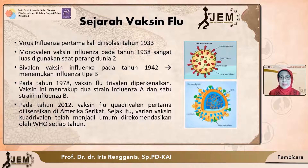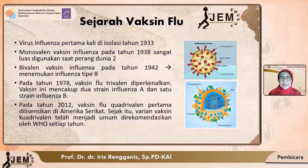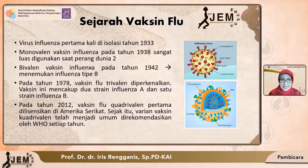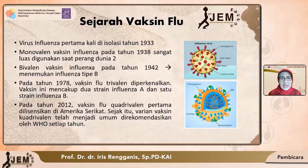Kita harus banyak belajar dari pandemik flu. Sejarah vaksin flu sendiri: virus influenza pertama kali diisolasi pada tahun 1933. Pada tahun 1938 ditemukan yang monovalen — hanya satu strain — dan digunakan luas saat Perang Dunia Kedua. Tahun 1942 timbul yang bivalen dengan dua strain. Tahun 1978 vaksin flu trivalen diperkenalkan, mencakup dua strain A dan satu strain B. Pada tahun 2012 vaksin flu kuadrivalen pertama dilisensikan di Amerika Serikat dan sejak itu direkomendasikan oleh WHO setiap tahun.